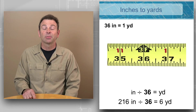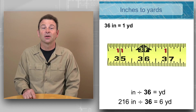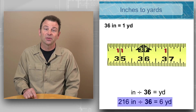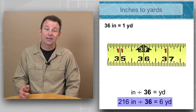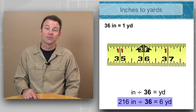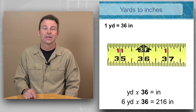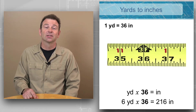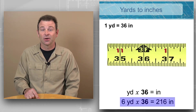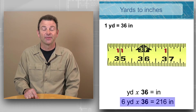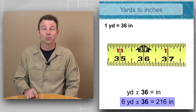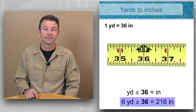An example of inches to yards would be 216 inches divided by our factor of 36 equals six yards. An example of yards to inches would be six yards multiplied by our factor of 36, which is going to equal 216 inches.